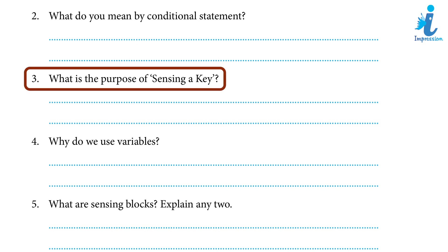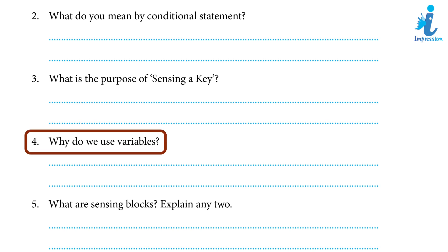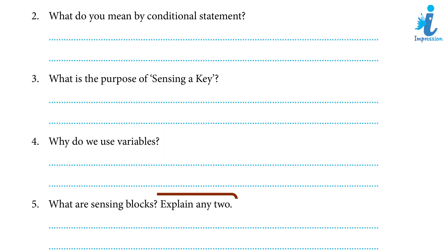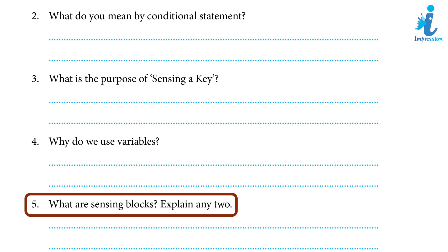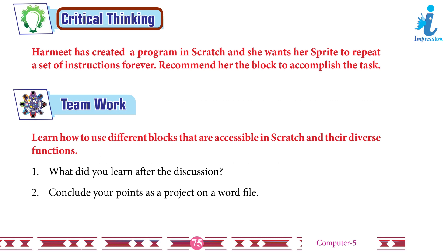Three, sensing a key — sensing blocks are used to recognize and quantify the interactions between items in a project or to track specific mouse and keyboard motion; it is color-coded blue and is one of the nine block categories. Four, variables are containers used to store data or information in programming; we can save distinct values — a name, a number, or any other kind of data. Five, sensing blocks are used to recognize and quantify interactions between items or track specific mouse and keyboard motion.